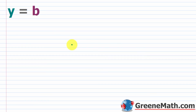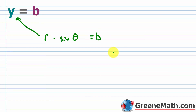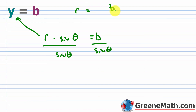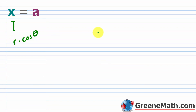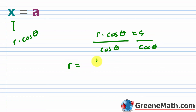For horizontal and vertical lines: if y = b, substitute r·sinθ for y and divide both sides by sinθ to get r = b/sinθ. If you see r = b/sinθ, you know it's a horizontal line. For a vertical line x = a, substitute r·cosθ for x and divide by cosθ to get r = a/cosθ.